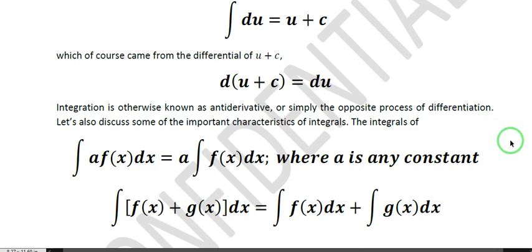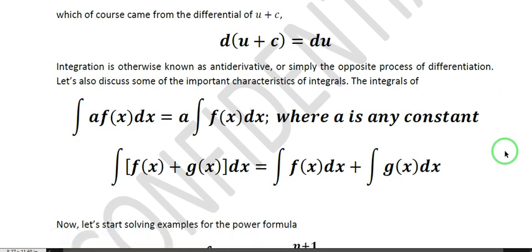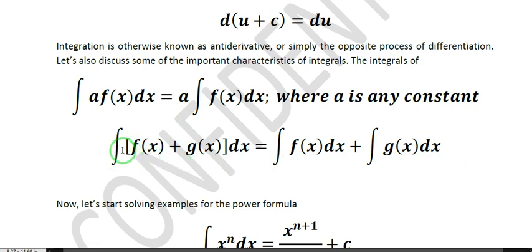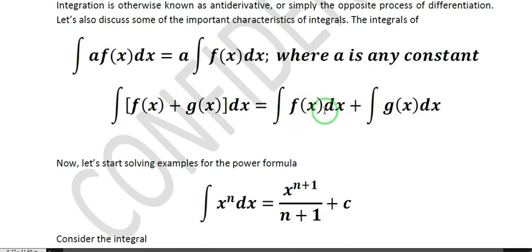Now let us discuss some important characteristics of integrals. If you have the integral of a times f(x) dx, where a is any constant, this is just equal to a times the integral of f(x) dx — you just put the constant outside the integral sign. Another characteristic is that if you integrate a sum or difference f(x) plus or minus g(x) dx, this equals the integral of f(x) dx plus or minus the integral of g(x) dx, integrating the individual terms separately.